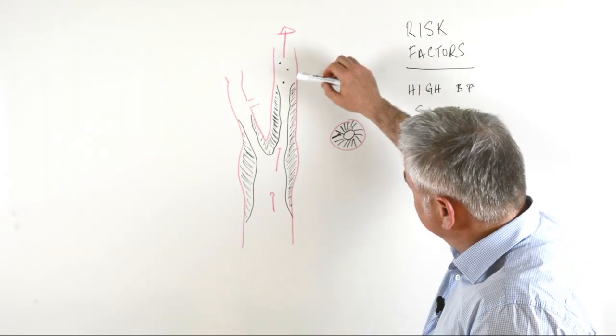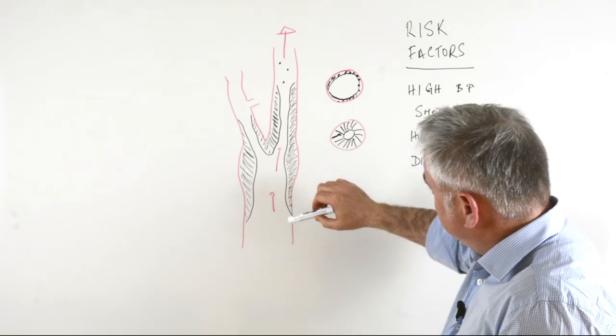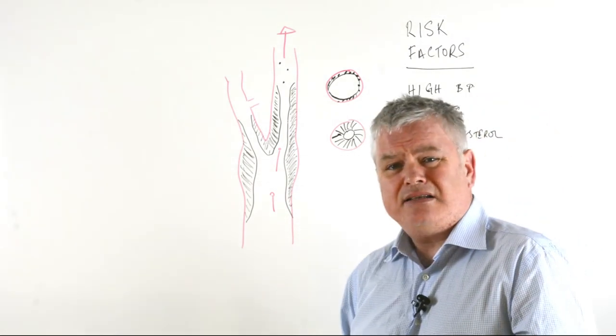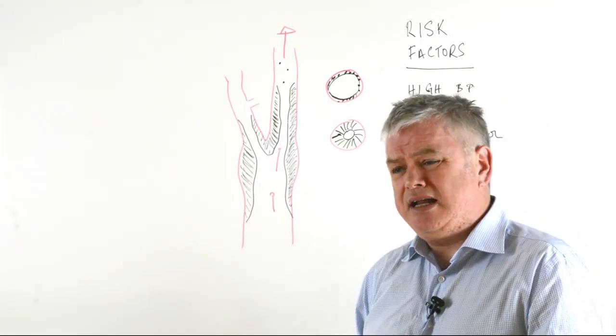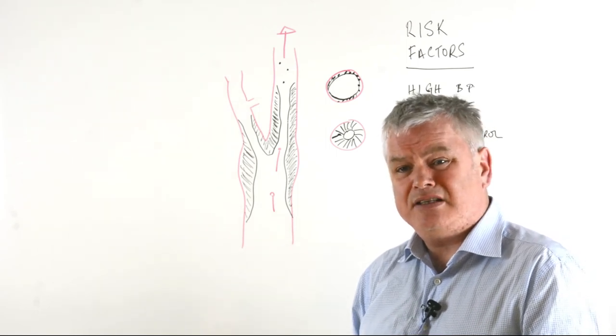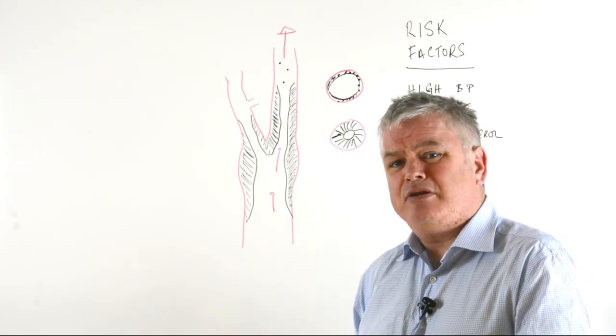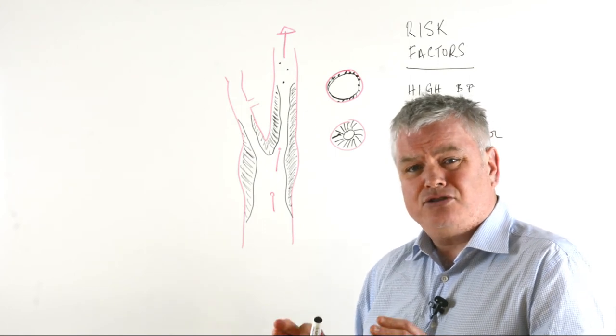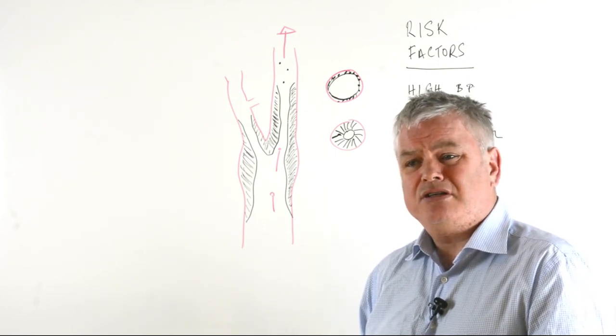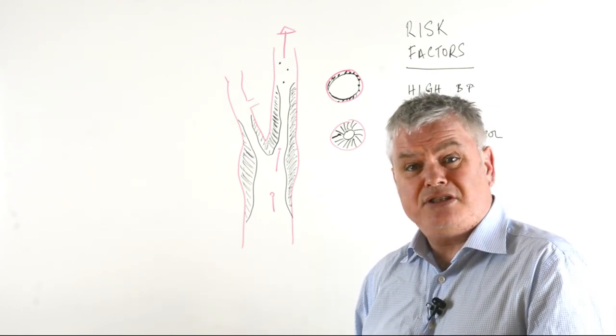Then what happens is the artery is opened along its length and this rather ragged, nasty irregular lining is then planed out from the inside of the blood vessel, leaving the majority of the blood vessel wall there and a nice shiny new lining which is not as diseased and not as dangerous.